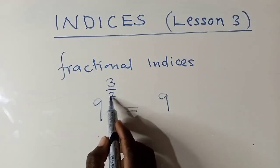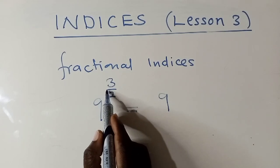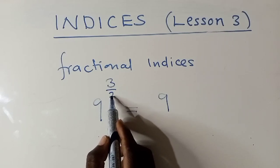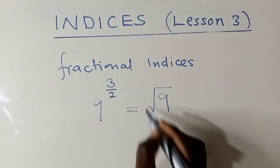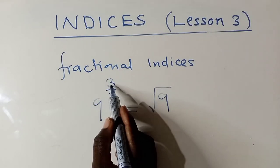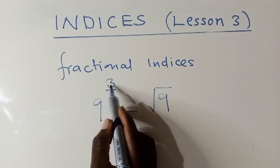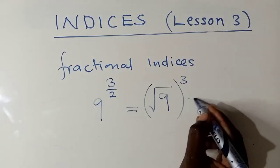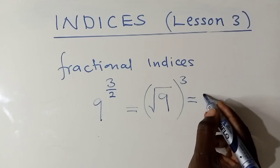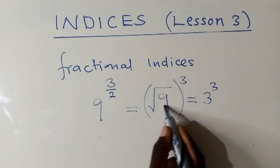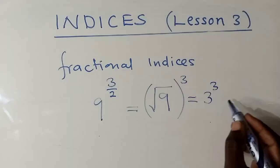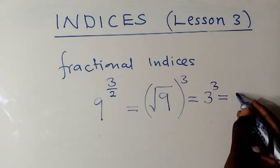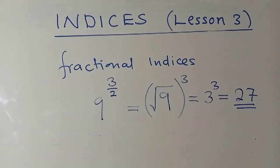This is what you're supposed to do. We know that the denominator — the 2 below — shows you this is a square root. So you put a square root. Now for the 3 on top, the numerator, it means you take the answer you get and raise it to the power 3. So the square root of 9 is 3, and then 3 to the power 3 is 27. I guessed it right!